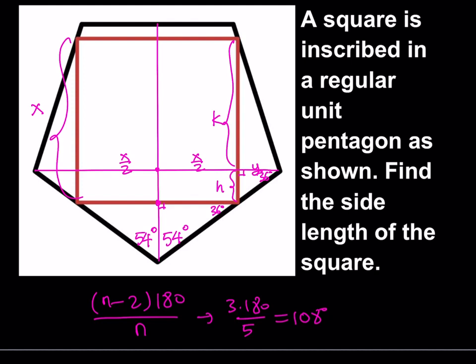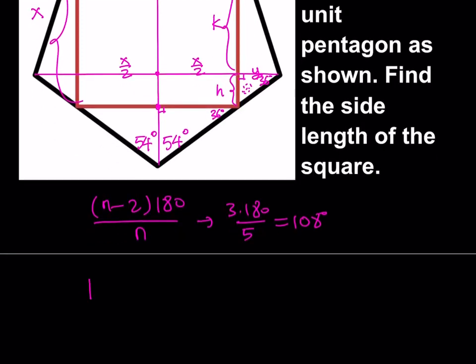Let's go ahead and calculate h first. To find h, I'm going to use this little triangle. Since I have the angle 36 degrees and I set the base to y, I can use trigonometry — specifically tangent 36. Tangent 36 is going to give us h over y. So h is equal to y times tangent 36. At least I know what h is in terms of y.